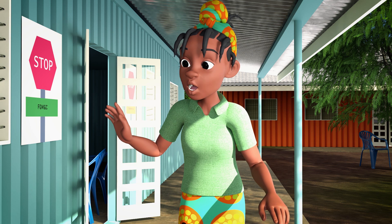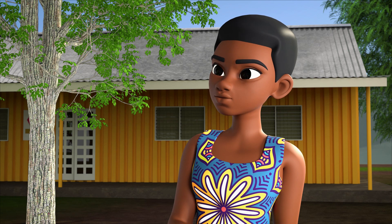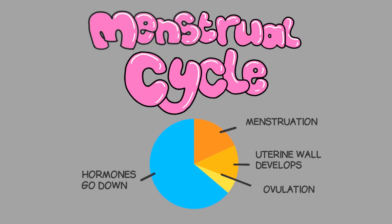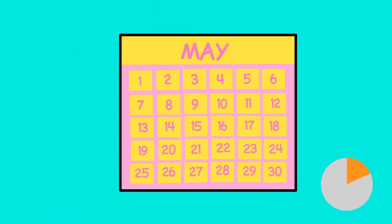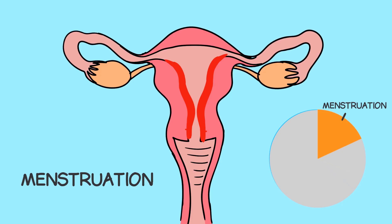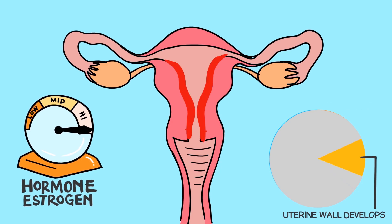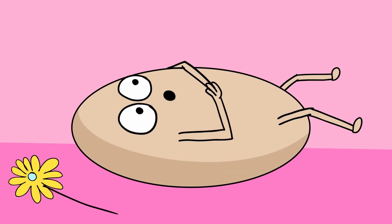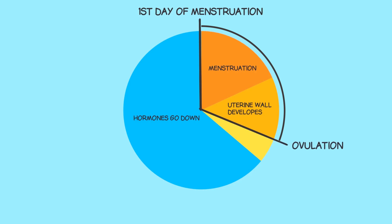When someone gets their period, it can change from month to month and throughout their life, and it is not the same for everyone who menstruates. The menstrual cycle is a series of changes a woman's body goes through in preparation for a possible pregnancy. It begins with menstruation, which is considered day one of the cycle. Menstruation is the shedding of the lining of the uterus. It continues with an increase in the hormone estrogen, and the lining of the uterus becomes thick and spongy again. An egg is released from one of the ovaries, and this is called ovulation.